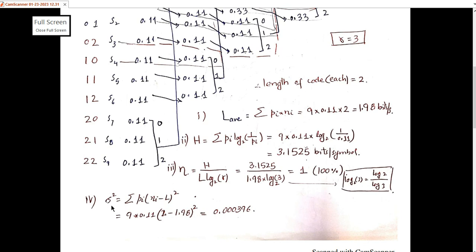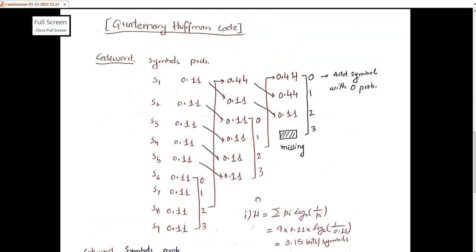The variance is calculated using the formula: sum of p_i × (n_i − L)², where L is the average code word length. Using the values, the variance equals 0.000396.